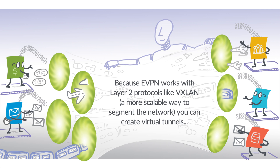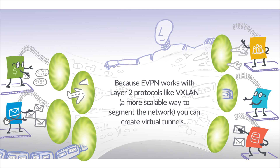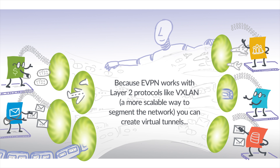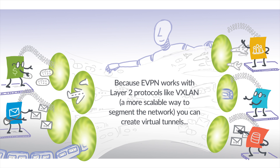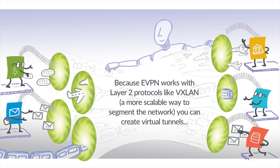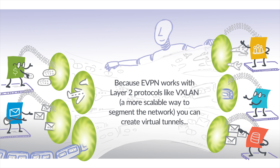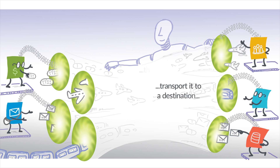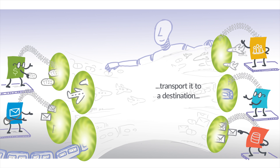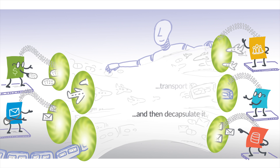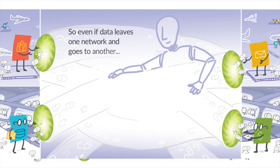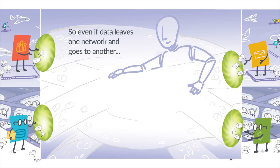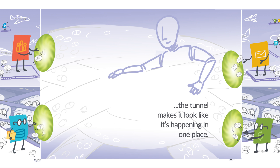Because EVPN works with Layer 2 protocols like VXLAN, a more scalable way to segment the network, you can create virtual tunnels that encapsulate data, transport it to a destination, and then decapsulate it. So even if data leaves one network and goes to another, the tunnel makes it look like it's happening in one place.